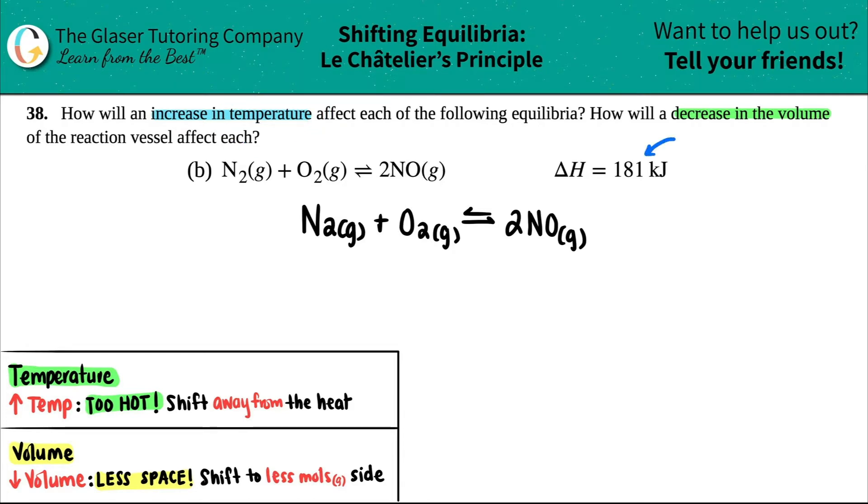So remember guys, in previous chapters we talked about delta H, which was enthalpy. Remember, if it's a positive value, which it is here - it's 181 - this is endothermic. So this is an endothermic reaction, and that means that the heat is absorbed. Exothermic means that it's released and this would be a negative value.